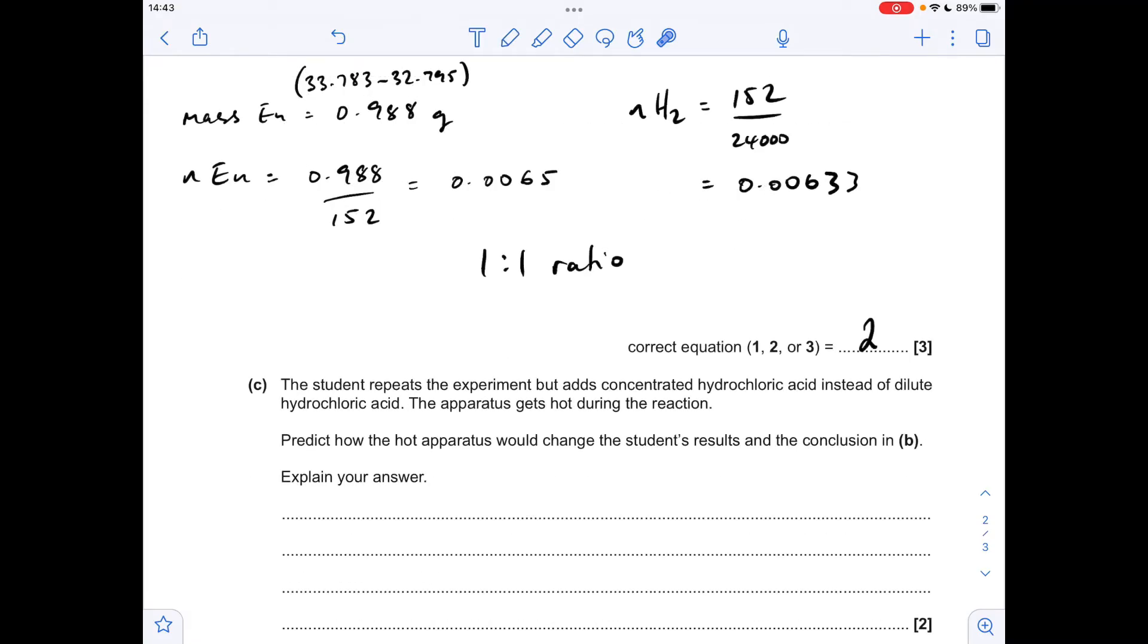So moving on to part C where the student's done the same thing but used concentrated hydrochloric acid instead of dilute and we're told that the apparatus gets hot. So what's that going to do? Well it's going to make the hydrogen gas expand and so we're going to record a higher volume of hydrogen.